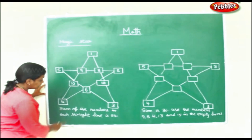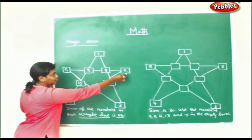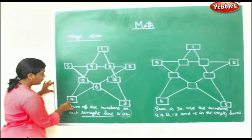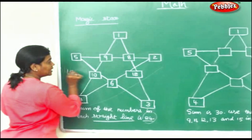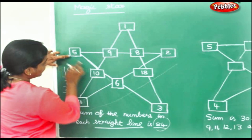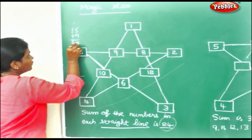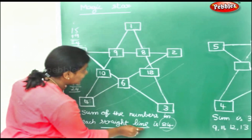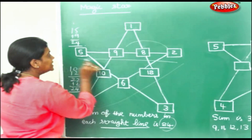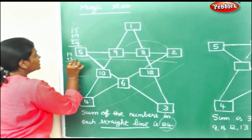Now, this is a magic star. The sum of the numbers in each straight line is 24 — it must be a straight line. For example: 6 add 4 is 10, 10 plus 12 is 22, 22 plus 2 is 24. Again, 10 plus 5 is 15, 15 plus 9 is 24. In the same way, 9 plus 2 is 11, 11 plus 8 is 19, 19 plus 5 is 24. Every straight line totals 24.